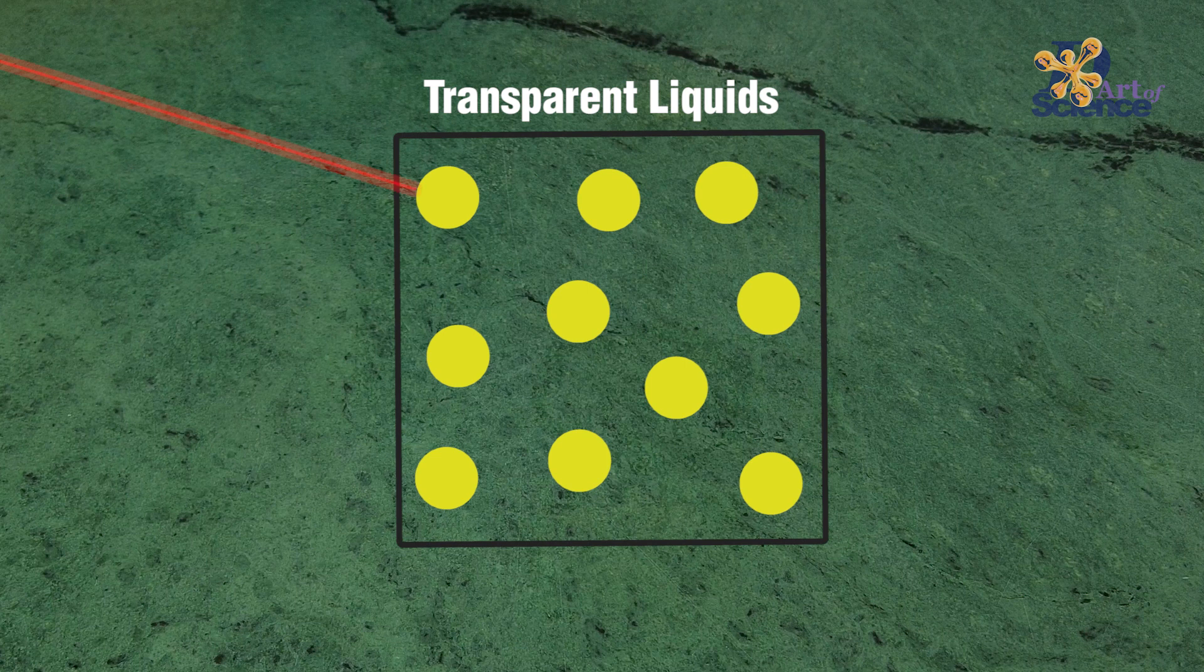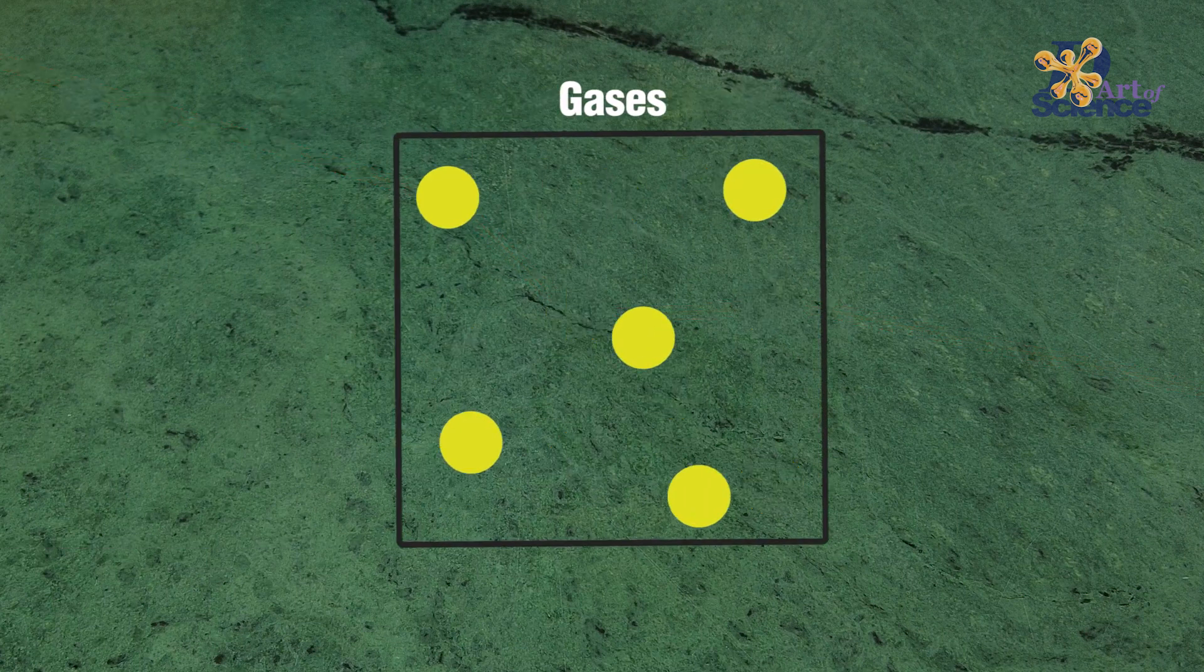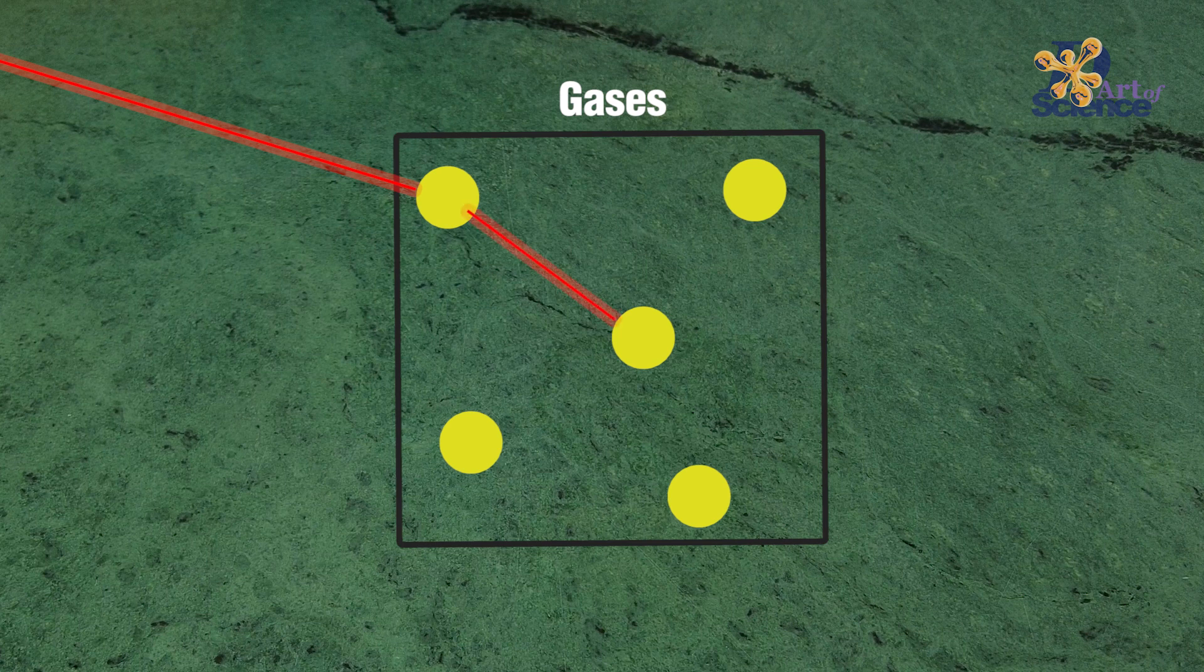In case of liquids, it has to dodge relatively less molecules. And in case of gas, it travels the fastest, much like our obstacle-free course.